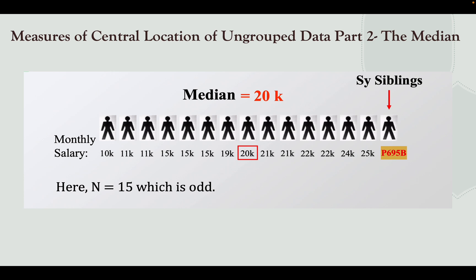Here in the C siblings example, with the given data, when you look at the middle term, we have n = 15 months. That means the 8th term is your median term — the median or your middle term.